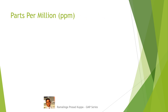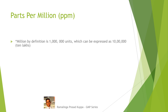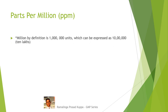Let us understand parts per million, that is PPM. Million by definition is thousand thousand units, which can be expressed as ten lakhs. One thousand thousands is referred as one million. This is equivalent to ten lakhs in our calculations. PPM is one part per million, that is one part in ten lakhs. So one PPM means one part in ten lakh parts, that is one million.